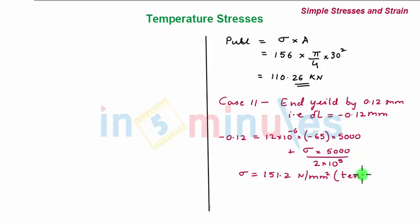Again it is a tensile stress. The corresponding pull will be given by sigma into A. Sigma is 151.2 multiplied by area, pi by 4 into 30 squared. So the load comes out to be 106.7 kilonewtons.